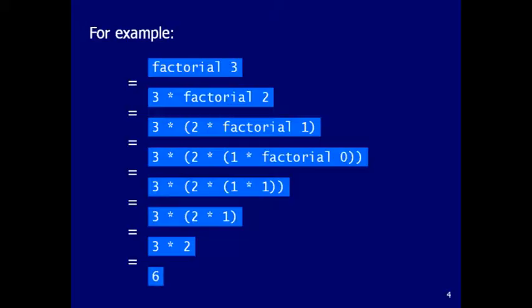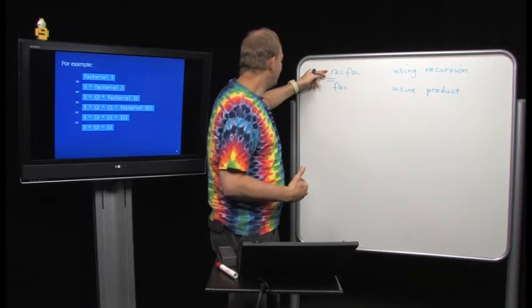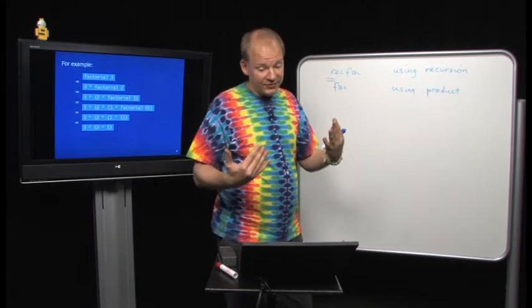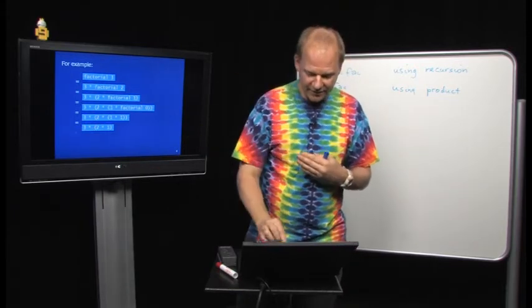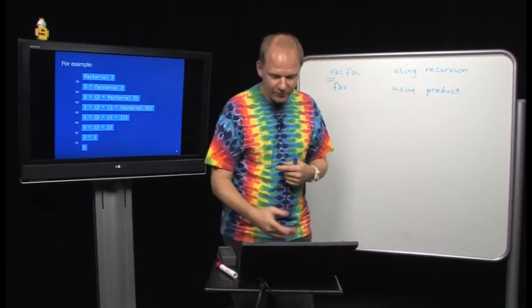When we execute factorial, we see it's much more along the lines of what I just showed with product. That should be a hint of how you can transform one definition into the other — because when you unfold the computation, it's exactly the same. So how can you prove that without unfolding the definition for every n? That's your exercise.